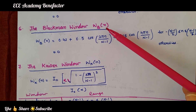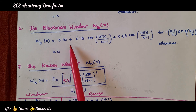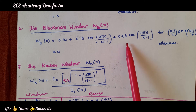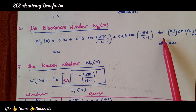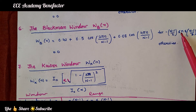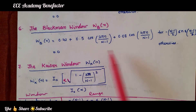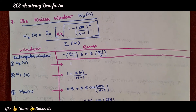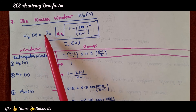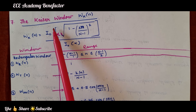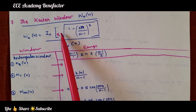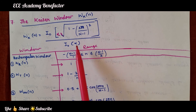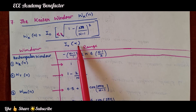The sixth window is the Blackman window W_b(n), where W_b(n) = 0.42 + 0.5·cos(2πn/(N−1)) + 0.08·cos(4πn/(N−1)) for −(N−1)/2 ≤ n ≤ (N−1)/2 and 0 otherwise. The seventh window is the Kaiser window W_k(n), given by I₀(α · √(1 − (2n/(N−1))²)) / I₀(α), where I₀ is the zeroth-order modified Bessel function.